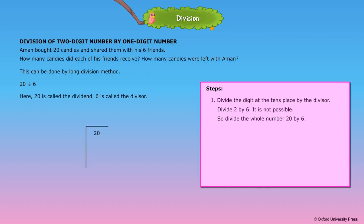Step 1: Divide the digit at the tens place by the divisor. Divide 2 by 6 — it is not possible. So divide the whole number 20 by 6. Step 2: We know 6 into 3 is equal to 18. So write 3 as quotient and write 18 below the dividend 20.